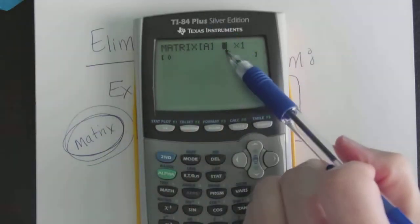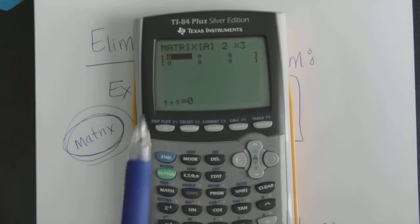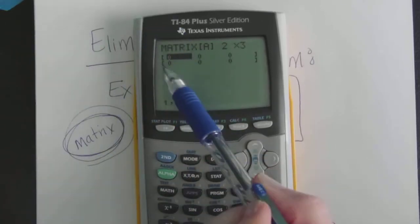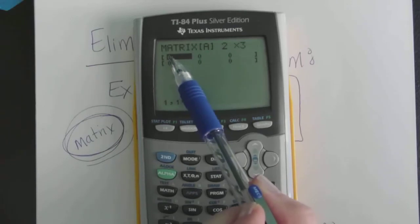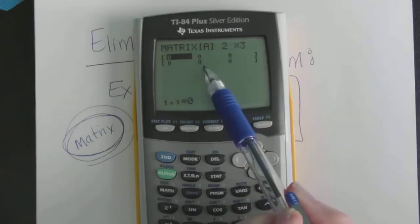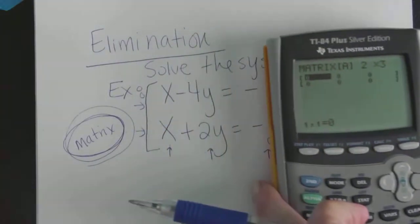So the first entry that's blinking here, we're gonna type a two because we have two rows. Then we'll arrow to the right and we have three columns and we'll hit enter. And if you look what pops up is sort of what we saw on the example. Two rows, three columns and there's room enough to type in six different numbers.